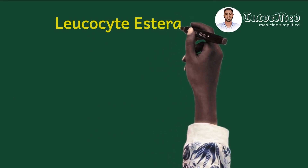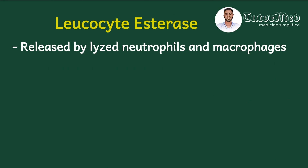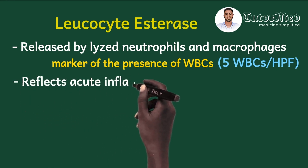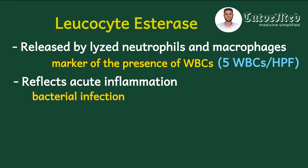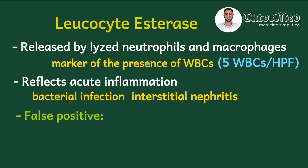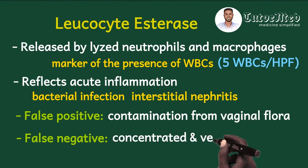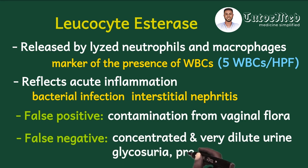The next parameter is leukocyte esterase. Leukocyte esterase is an enzyme released by lysed neutrophils and macrophages, and its presence reflects a marker of white blood cells in the urine. For the dipstick to detect it, the threshold is at least 5 WBCs per high power field. Its presence usually reflects acute inflammation, most commonly from bacterial infection, but also from interstitial nephritis or renal tuberculosis. False positives commonly result from contamination by vaginal flora. False negatives can occur with very concentrated or over-dilute urine samples, glycosuria, proteinuria, or certain drugs.